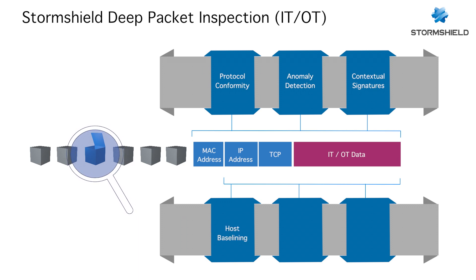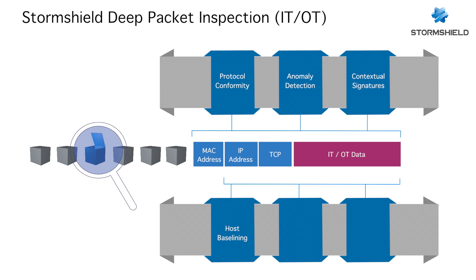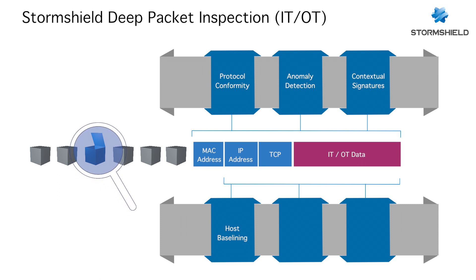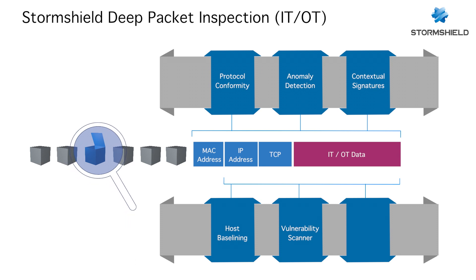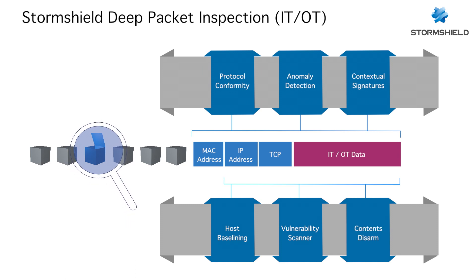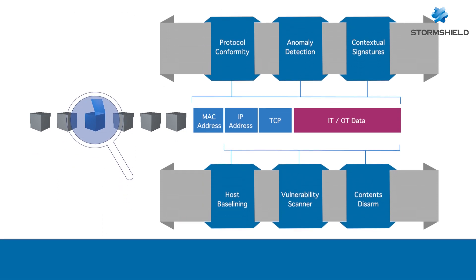In parallel, internal assets reputation scoring is calculated every 15 minutes to build an internal hosts baseline. The traffic is also scanned for known applications, operating systems, and vulnerabilities, with the ability to disarm malicious content instead of only blocking it.